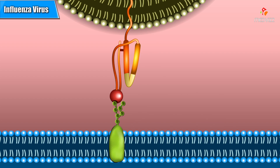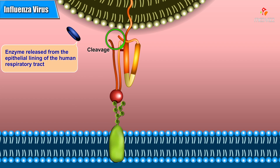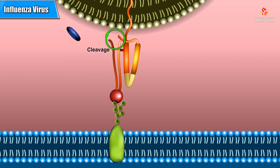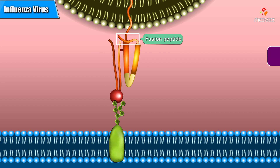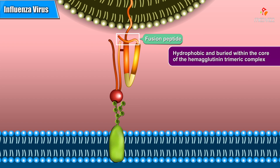For an influenza virus to become infective, hemagglutinin must be cleaved. An enzyme released from the epithelial lining of the human respiratory tract performs this function. The cleavage frees one end of a segment called a fusion peptide. The fusion peptide is hydrophobic and buried within the core of the hemagglutinin trimeric complex.